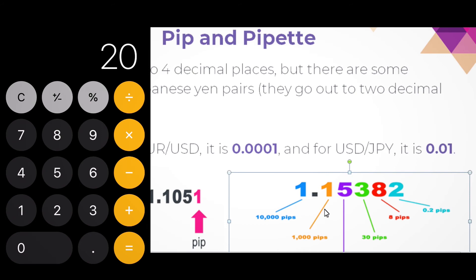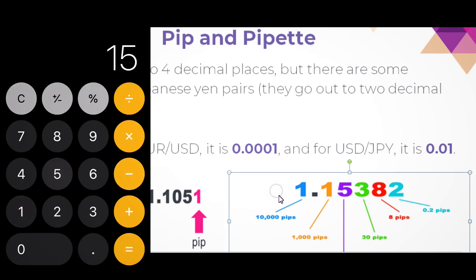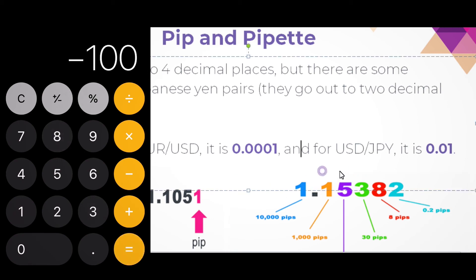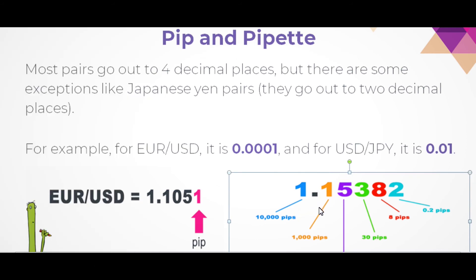Let's take another example. The entry price is 1.1538, and now the price moved to 1.1438. Since we bought the currency pair, that means we've lost some PIPs and some money. We've lost 100 PIPs. 100 times $10 is $1,000 — that means we've just lost $1,000.